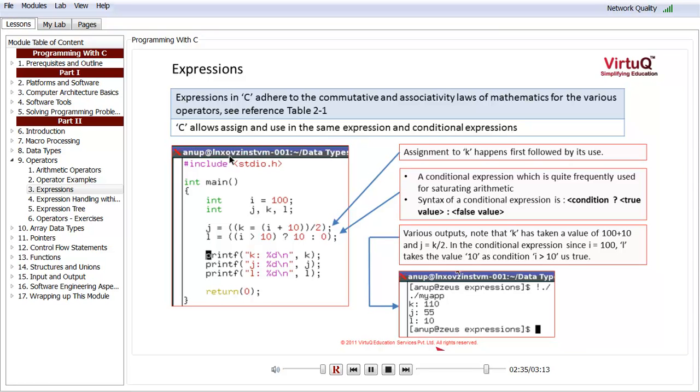Also note the use of parenthesis to disambiguate between the various operators and the operator precedences. If we did not have a parenthesis around k equals i plus 10, then we are not really sure when the value of k will get assigned until and unless we are very clear on the precedences. The parenthesis use actually makes it much more readable. Because even if you are familiar with the various precedence rules, someone else might not be. Since parenthesis have the highest precedence, then anything within parenthesis is evaluated first followed by anything else.